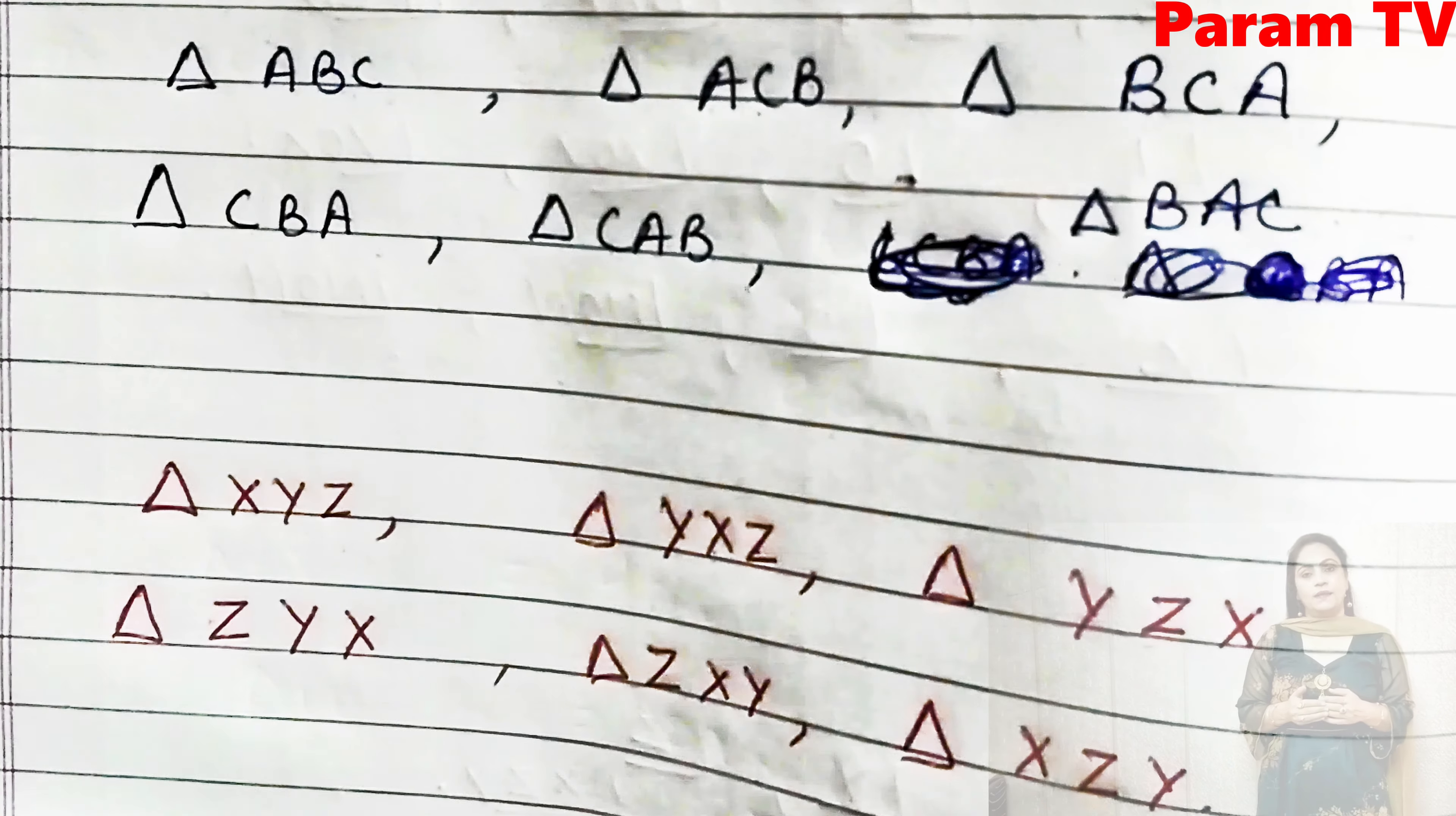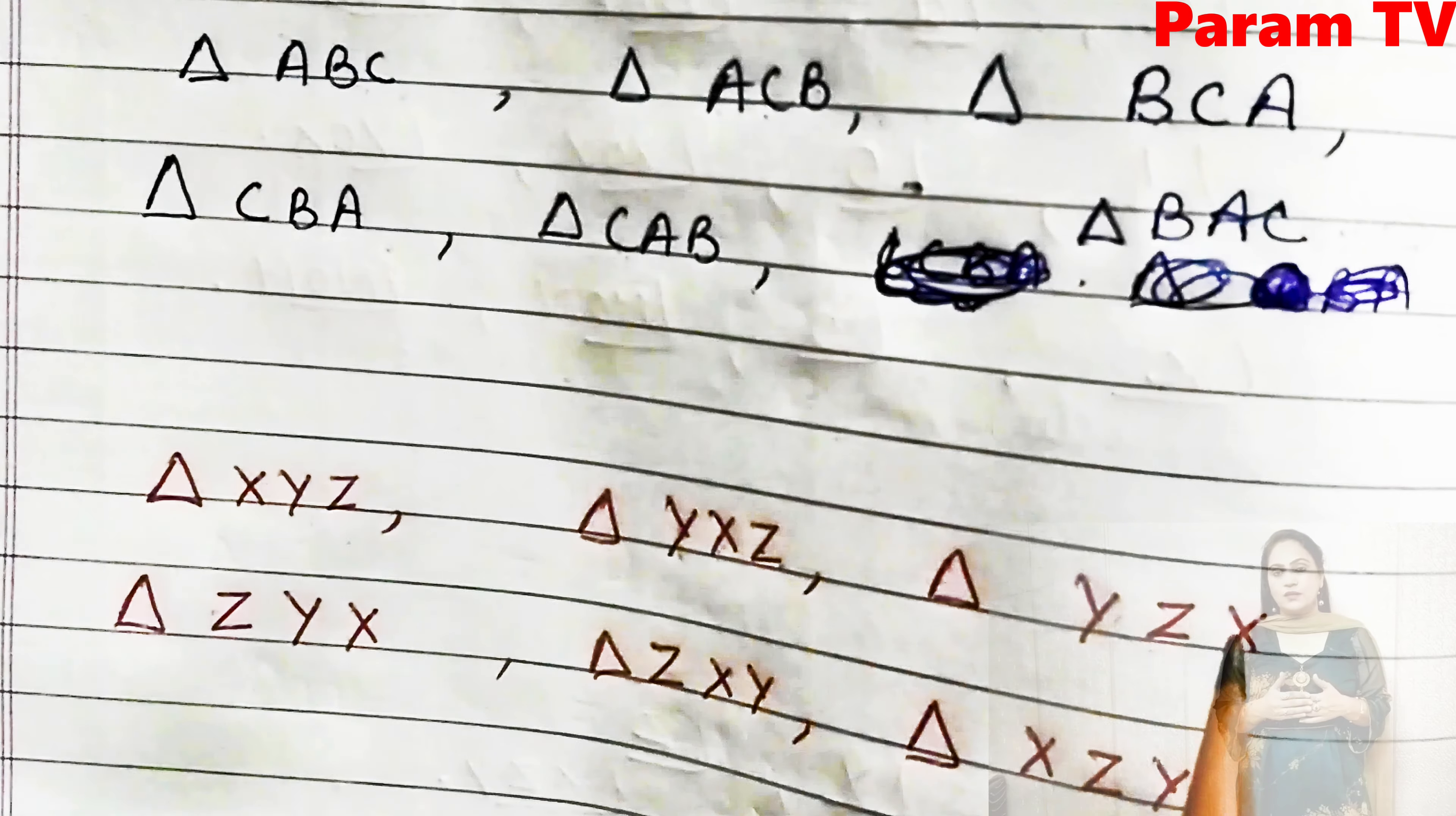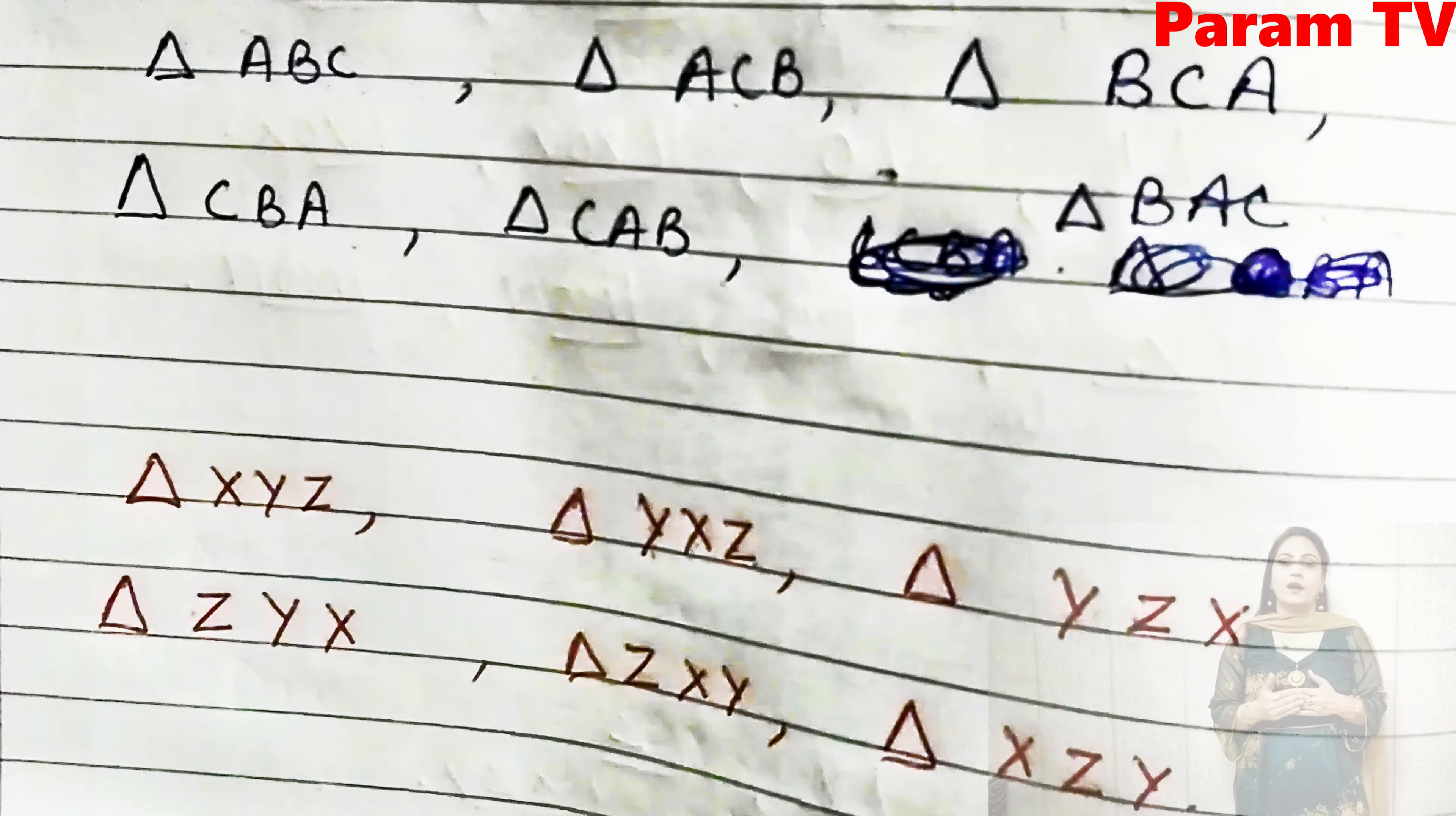Then X, Y, Z. You can start with Y. You can write the name with X center and then Z, Y, Z center and then X. This way, you can write it in six ways. Same for LMN as well.